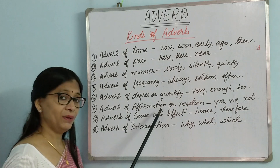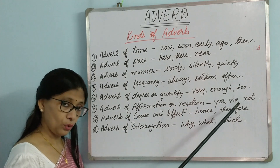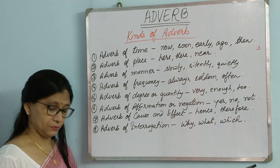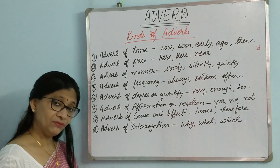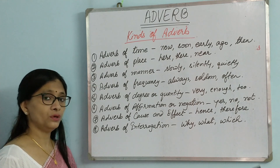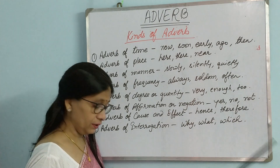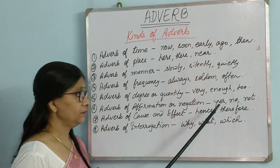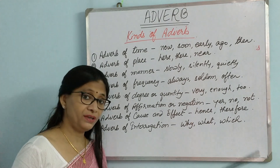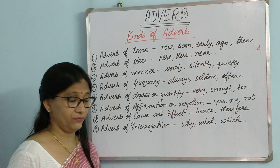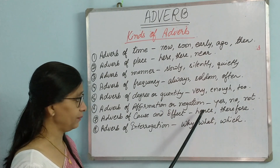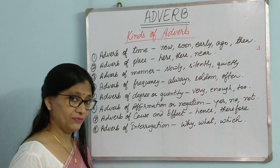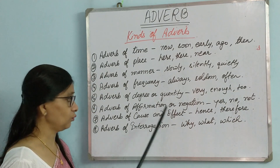Then we have adverb of affirmation and negation. Affirmation means yes, negation means no. Examples: 'Yes, I did it.' 'No, I didn't go to school.' 'He never tells a lie.' 'She did not go to school.' Words like never, not, no are all adverbs of negation. Then we have cause and effect — words like hence, therefore, consequently. Example: 'She therefore kept quiet' and 'Consequently, he became famous.'